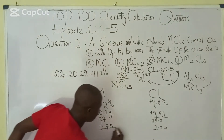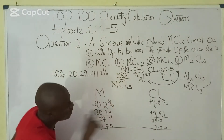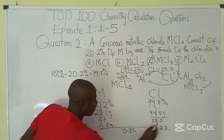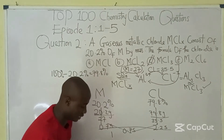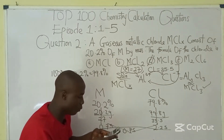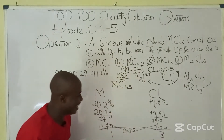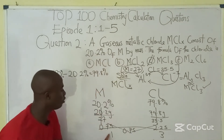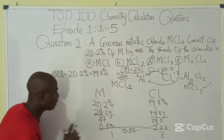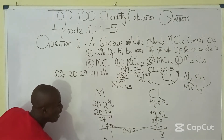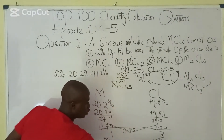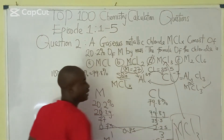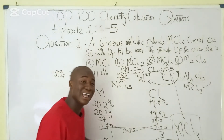The next step is to divide by the smallest value. The smaller is 0.75, so: M becomes 0.75 ÷ 0.75 = 1, and Cl becomes 2.25 ÷ 0.75 = 3. The chemical formula is M₁Cl₃, which gives MCl₃. This confirms option C as the answer.